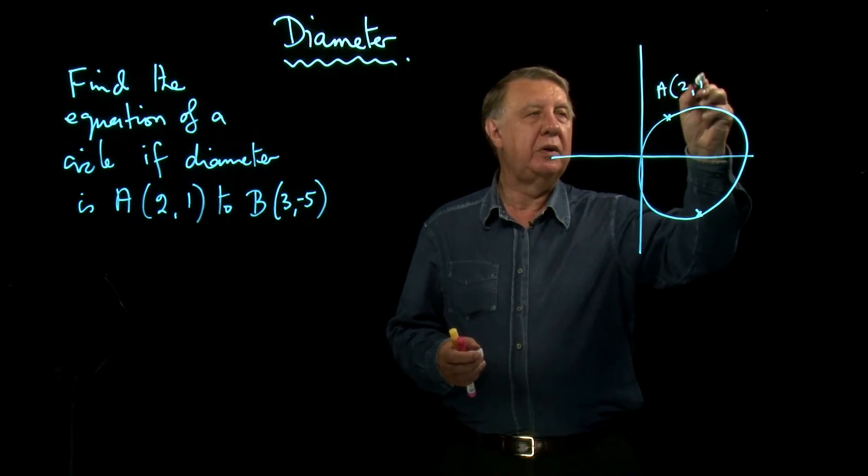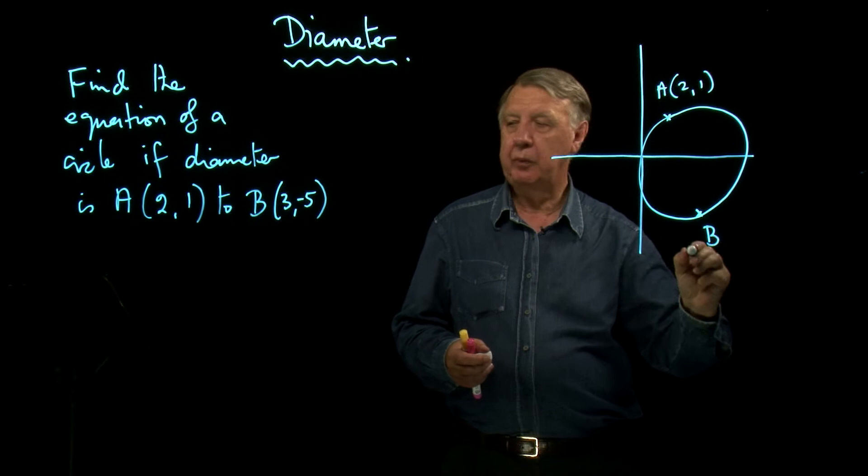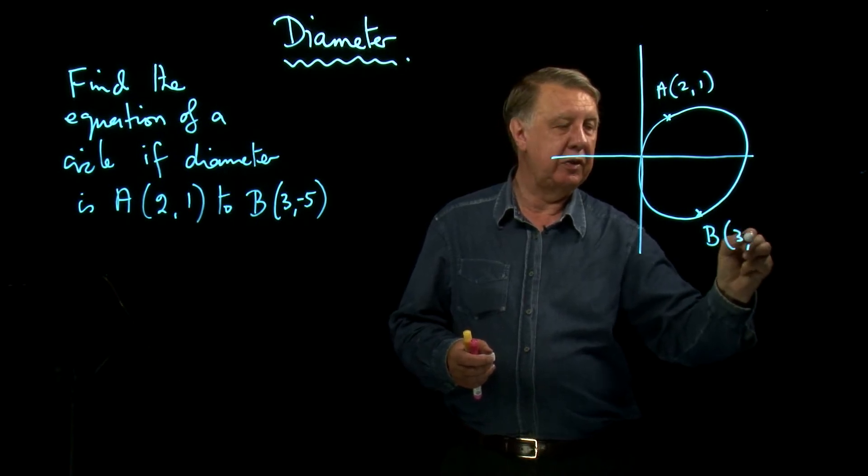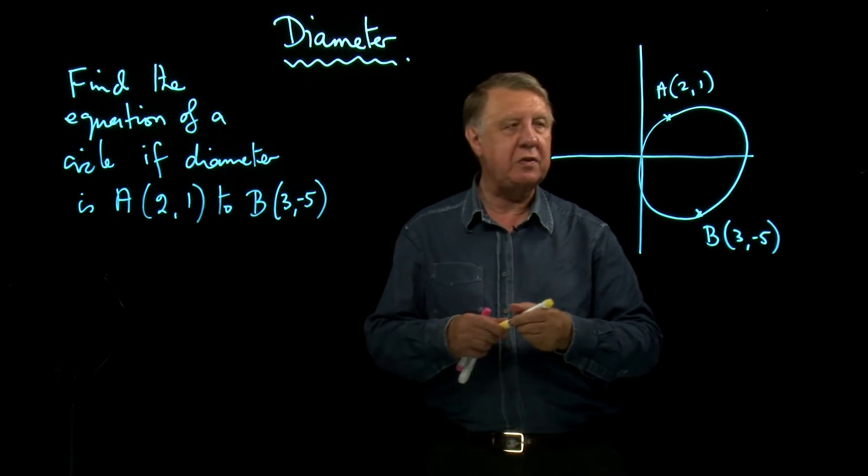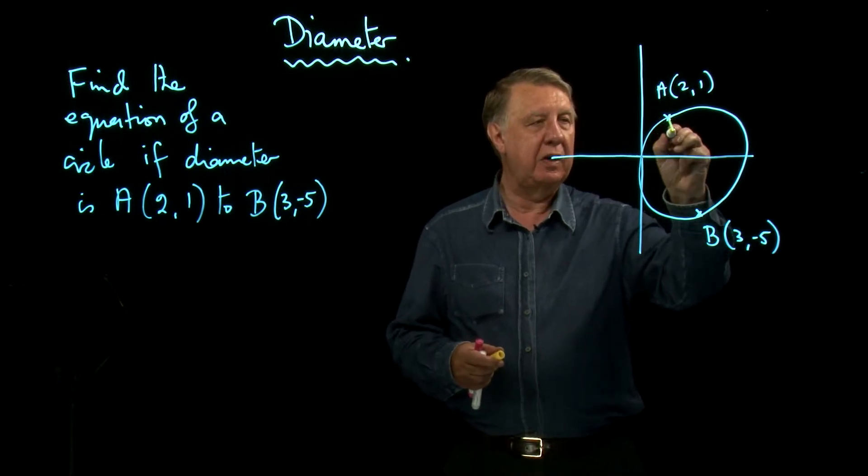A, two one, B, three minus five. Okay so we're told then that this line is the diameter.